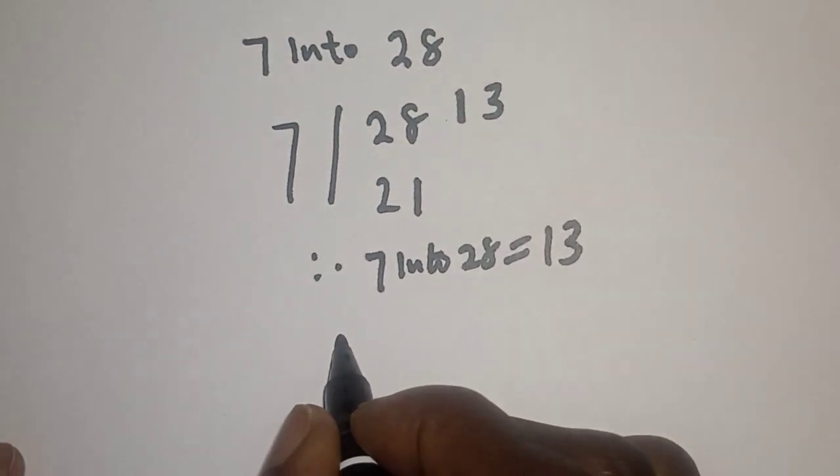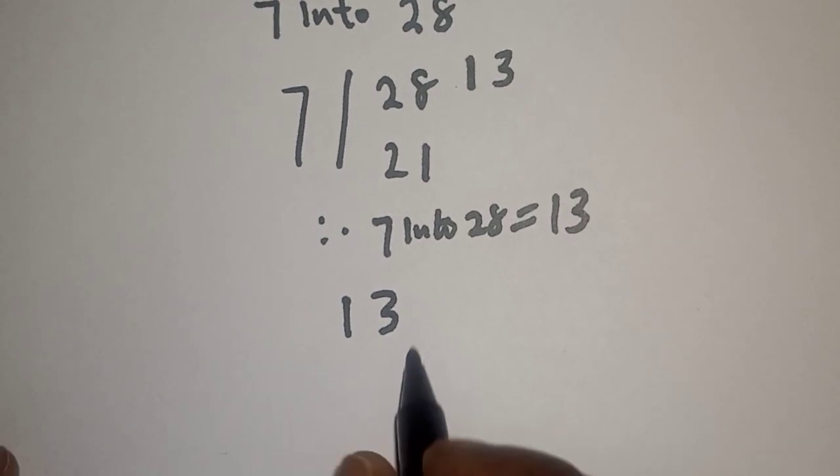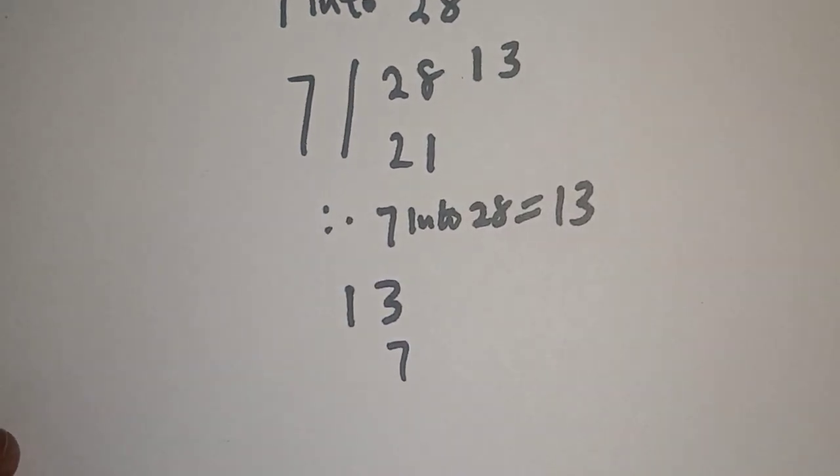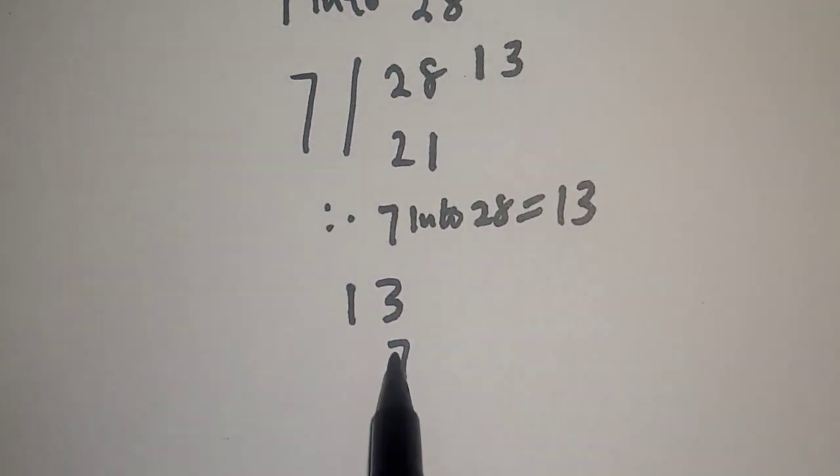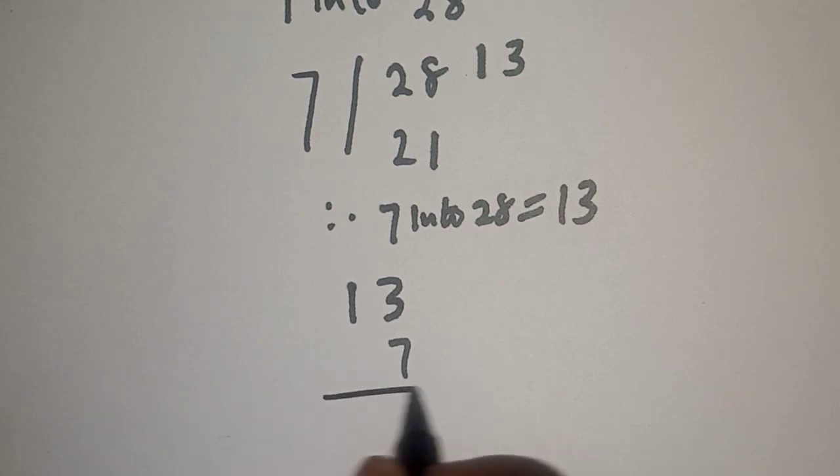If you multiply 13 by 7, now let's see how we can prove it. 7 times 3, this is...